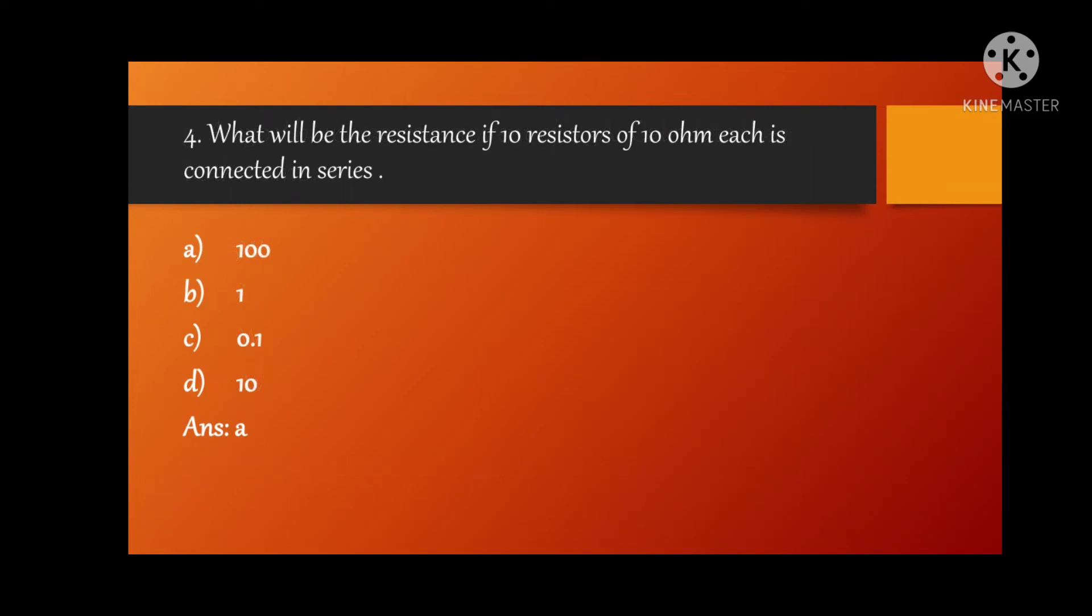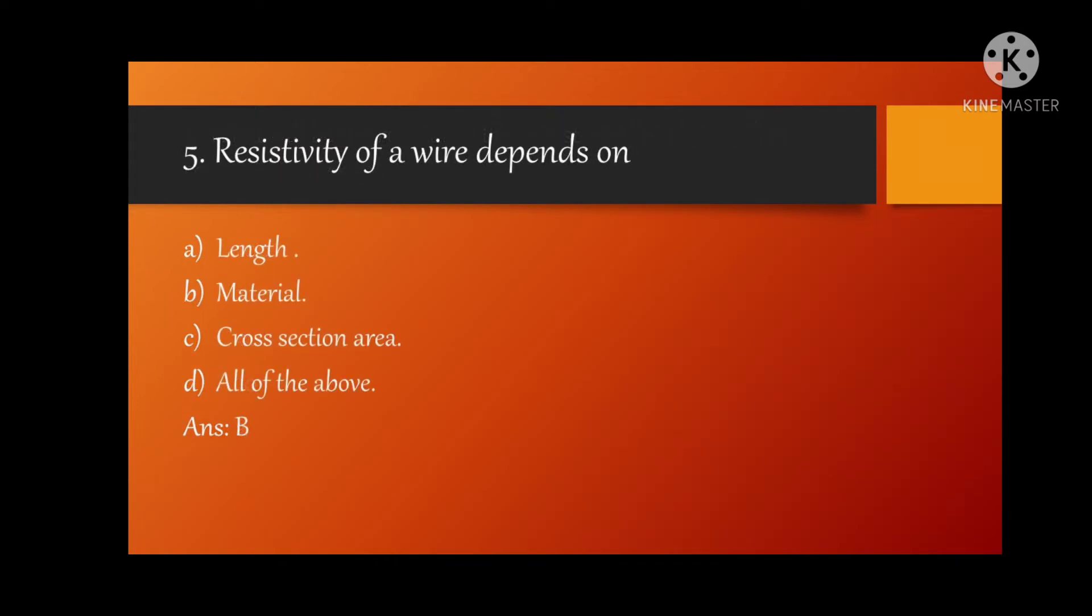MCQ number four: what will be the resistance if 10 resistors of 10 ohm each is connected in series? Option A is correct, that is 100. MCQ number fifth: resistivity of a wire depends on? Option B is correct, that is material.